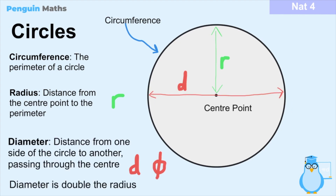The diameter of the circle is a line which passes through the centre point and connects to either side of the circle. In maths, the diameter is illustrated by writing a D or using the symbol of a circle with a line through it — both mean the same thing. It's very important to remember that the diameter is double the radius: the radius connects the centre point to one edge, while the diameter passes through and connects to the other end. So the radius is half the diameter, or the diameter is double the radius.